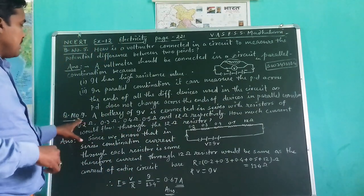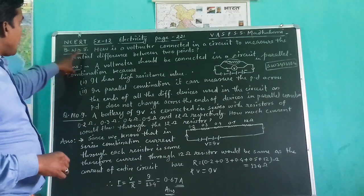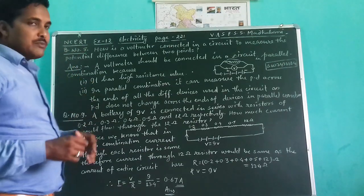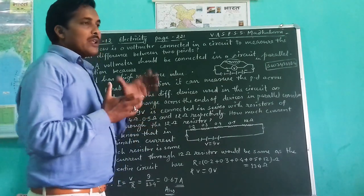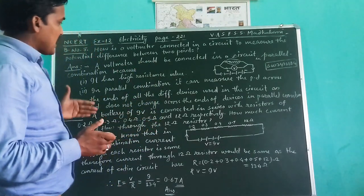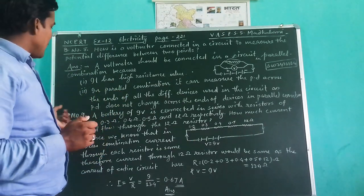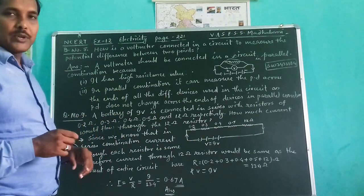So here, written: In parallel combination, it can measure the potential difference across the ends of all different devices used in the circuit, as potential difference does not change across the ends of the devices in parallel combination. Now, come to the question 9. I have not solved after 5, 6, 7 and 8. These questions will take more and more spaces. And due to the crisis of the space here, I have managed to solve the question number 9.